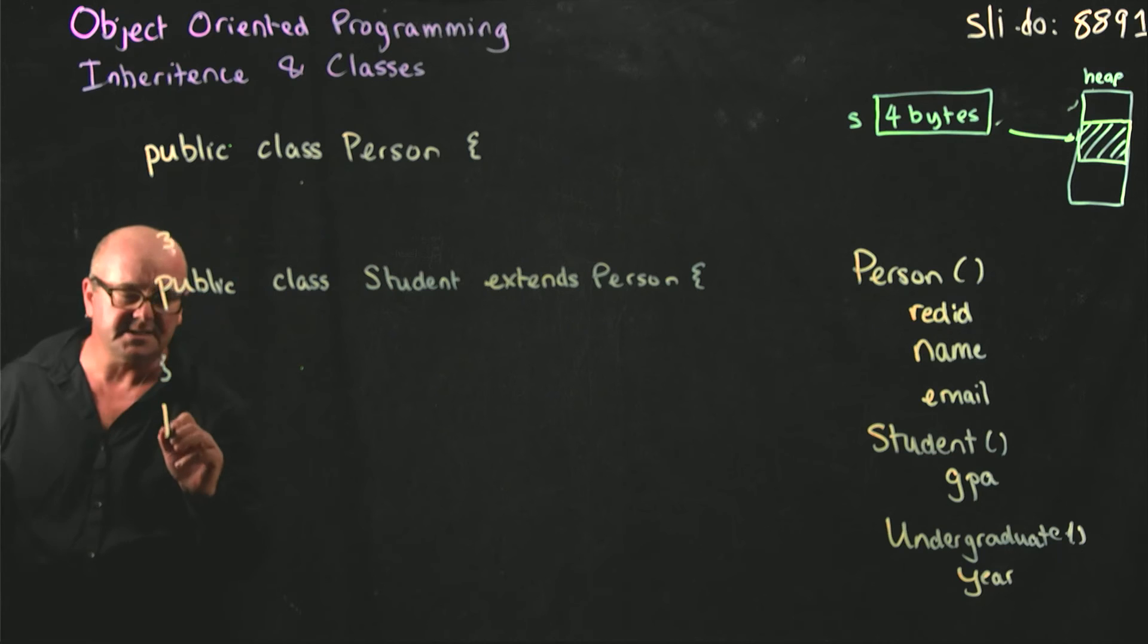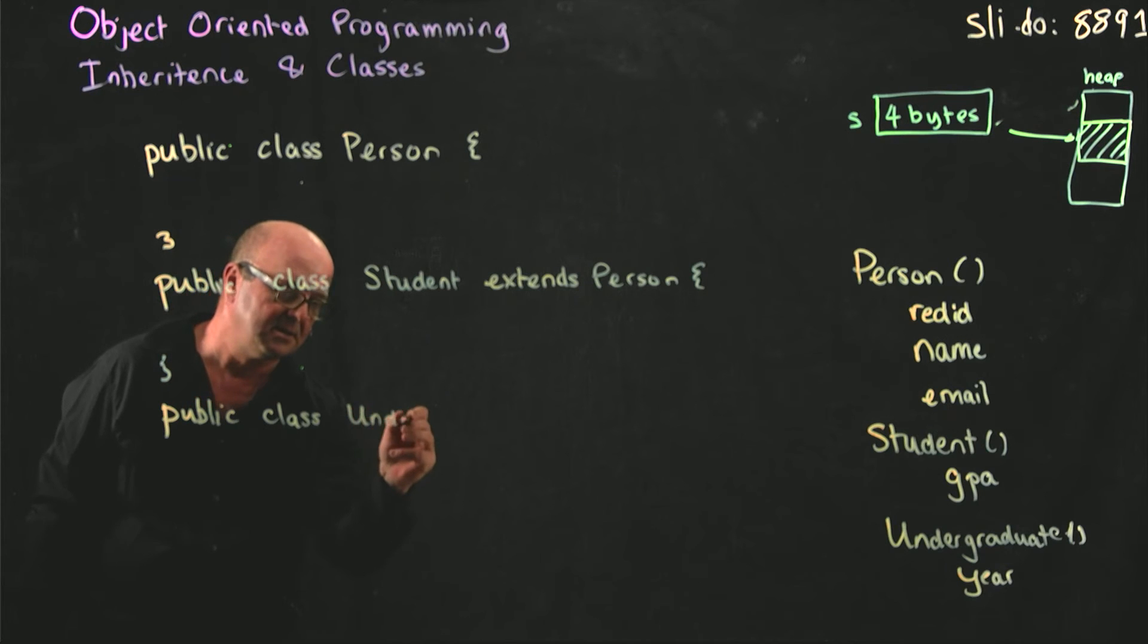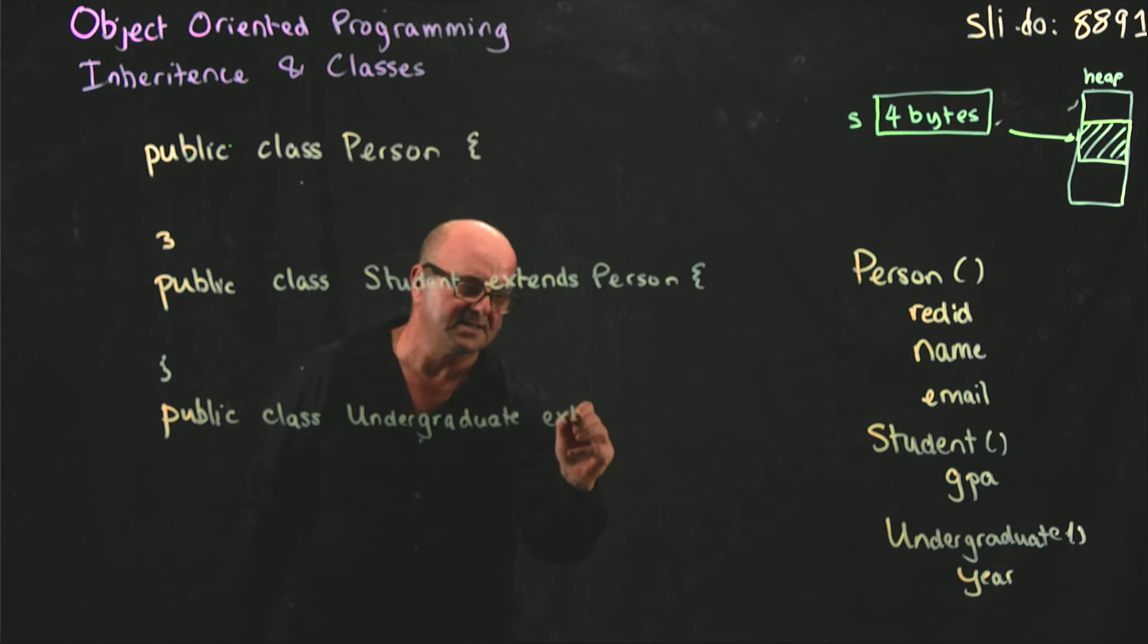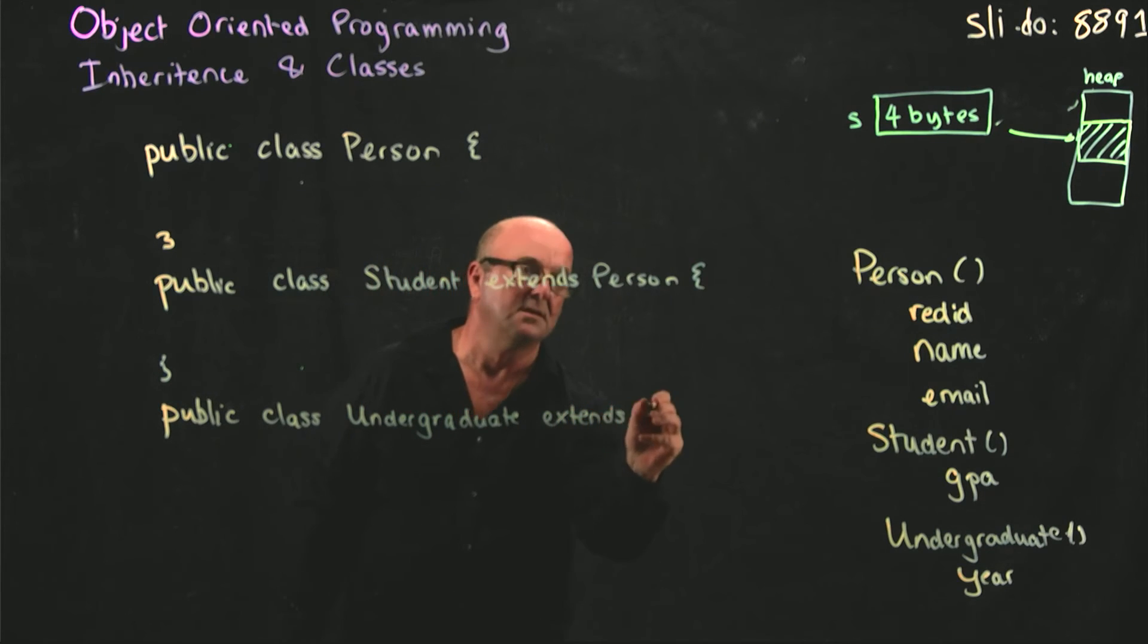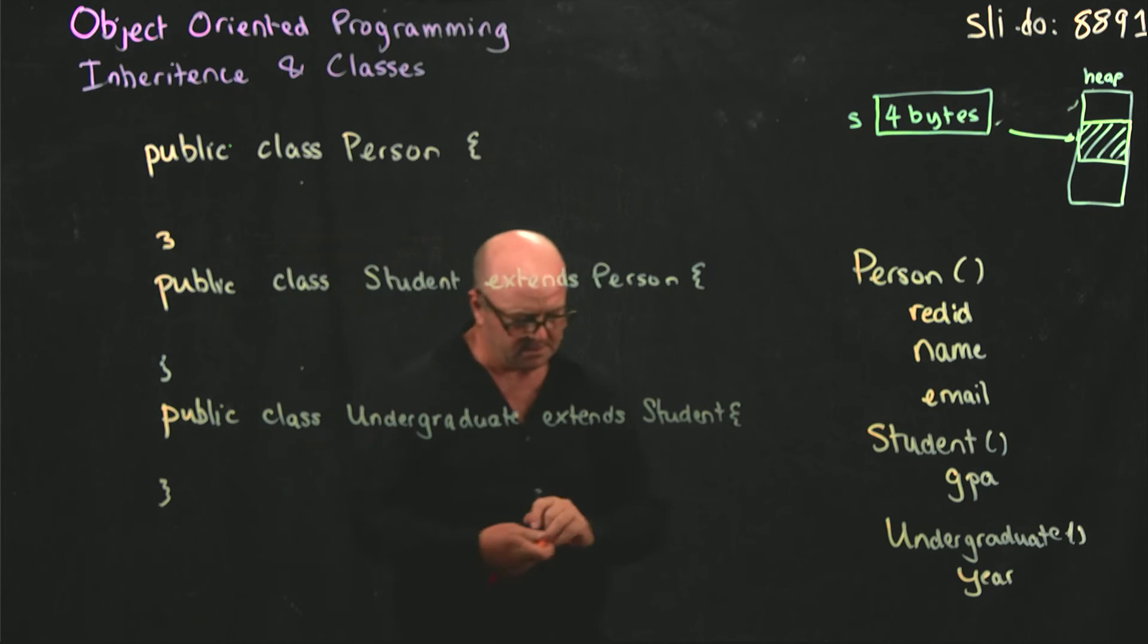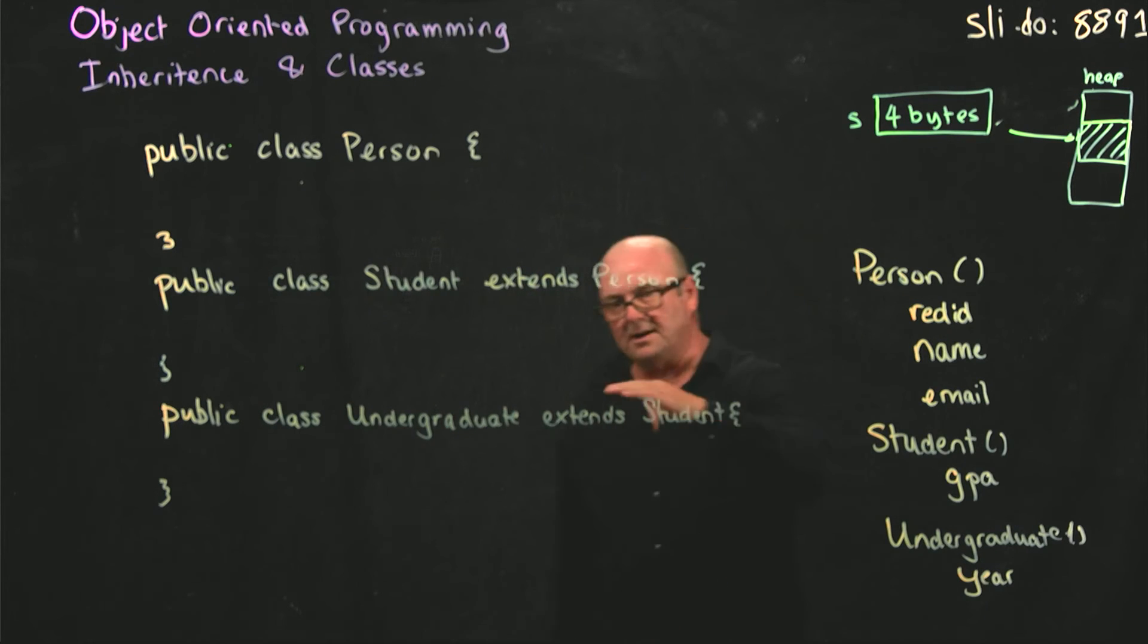And then similarly, we have our undergraduate class that extends student. So undergrad extends student, student extends person, therefore undergraduate extends person.